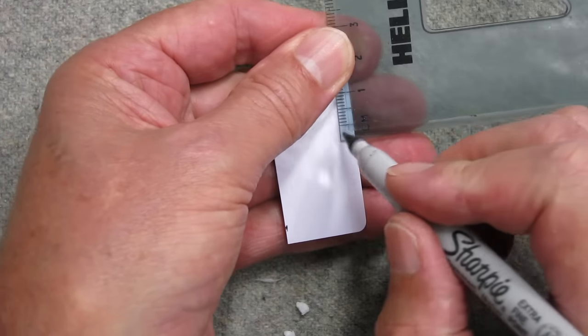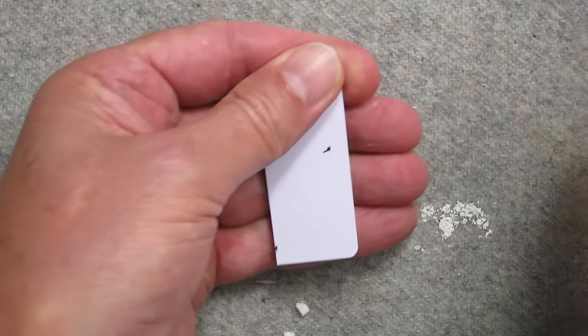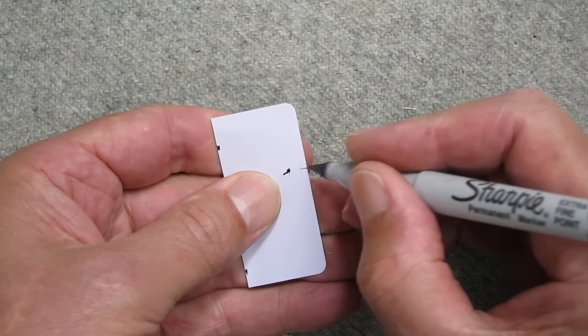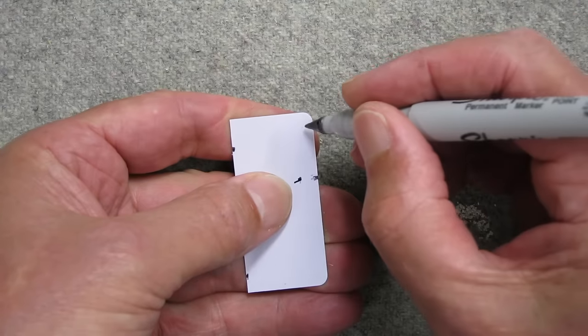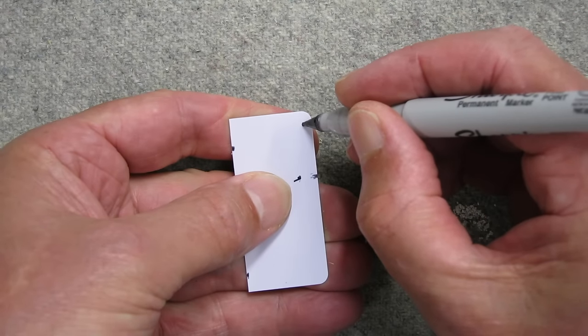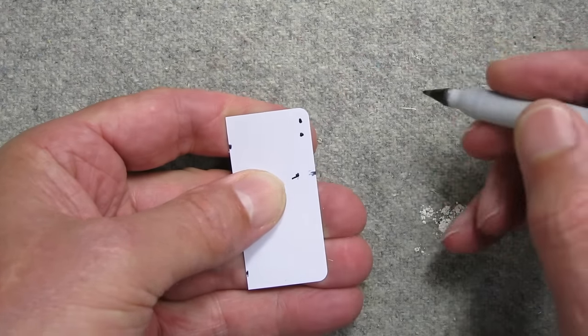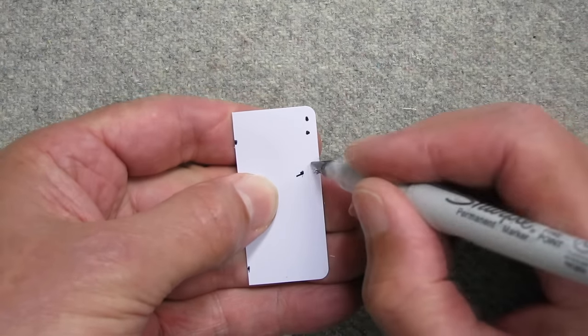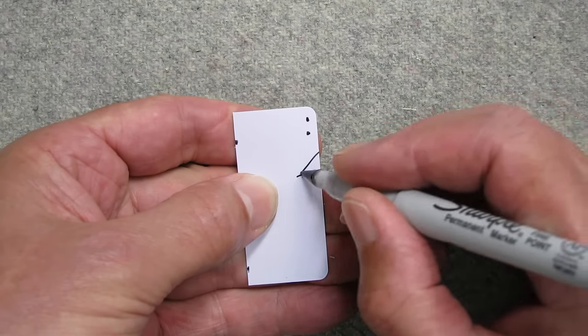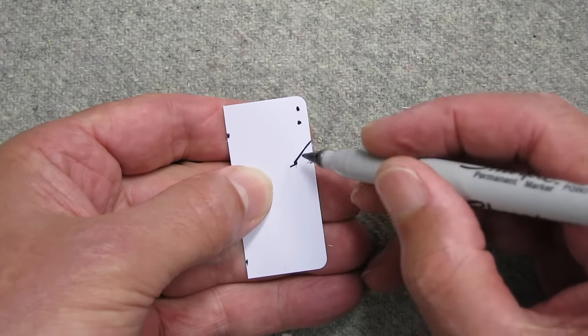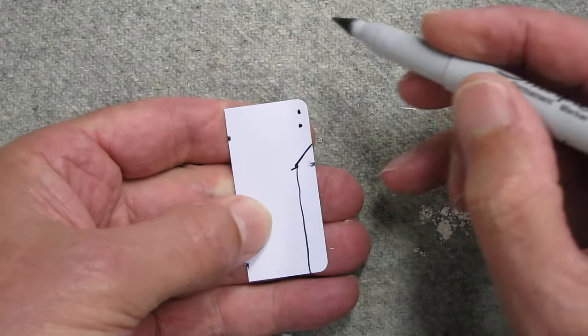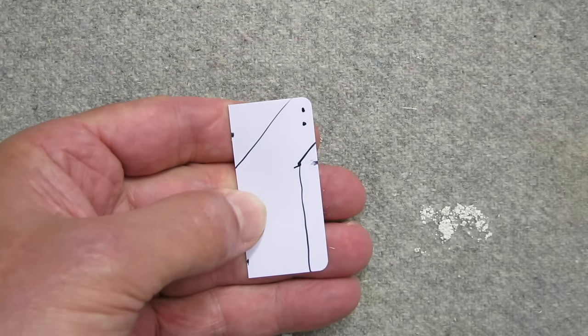So I measure 20mm down. I'm going to drill a hole there and there. I'm going to cut an angle there, straight down there and cut the back off there.